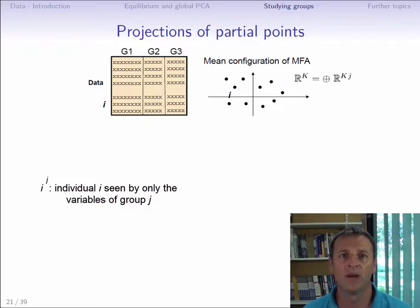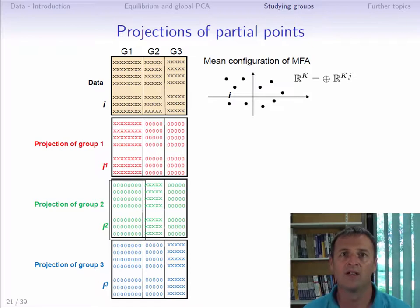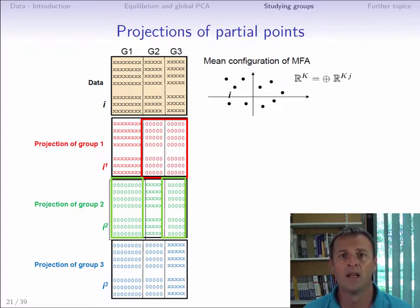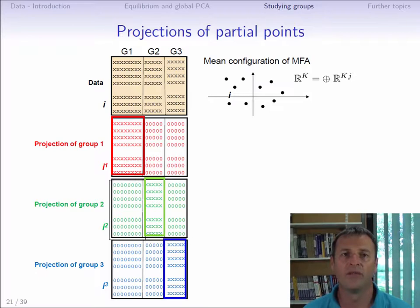How can we represent this partial individual, and how can we represent all of the partial individuals associated with a given individual — namely partial individuals I1, I2, up to I big J — in the same plot? The shared plot is the space provided by the MFA using data from all of the groups. We juxtapose one table per group with the main data table. In the subtable for group J to be projected, all variables that do not belong to group J take the value zero. The values of the variables belonging to group J are centered and possibly standardized, then divided by the square root of the first eigenvalue of the group — in other words, the values used in the overall MFA analysis.